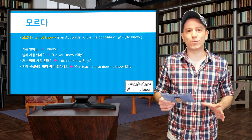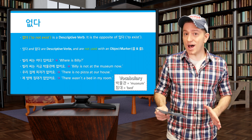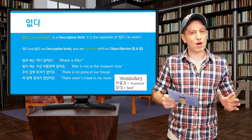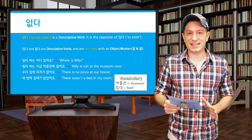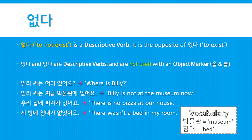The next negative verb we're going to look at is 없다, a descriptive verb meaning 'to not exist.' 없다 is the opposite of 있다, 'to exist.' Note that both 있다 and 없다 are descriptive verbs and therefore cannot use the object marker. Examples: 빌리 씨는 어디 있어요? — Where is Billy? 빌리 씨는 지금 박물관에 없어요 — Billy is not at the museum now. 우리 집에 피자가 없어요 — There is no pizza at our house. 제 방에 침대가 없었어요 — There wasn't a bed in my room.